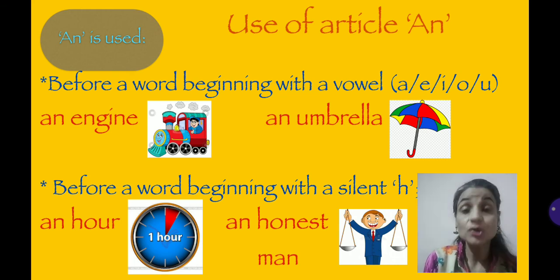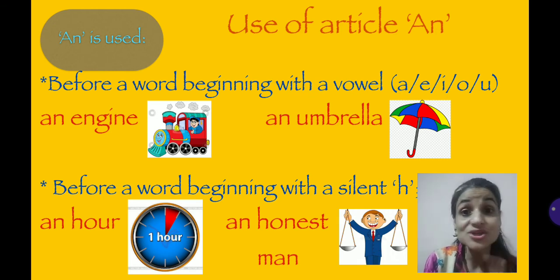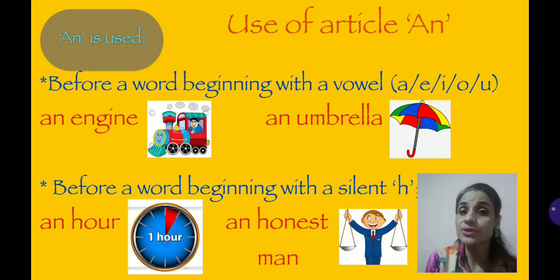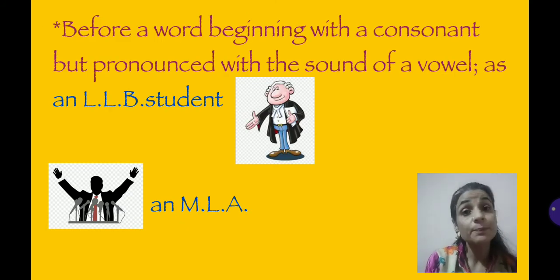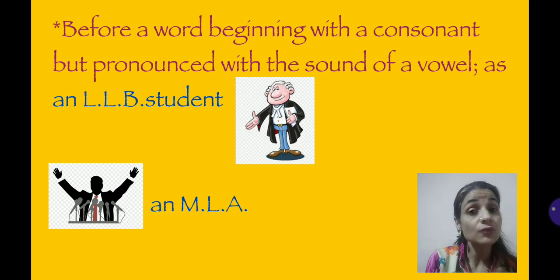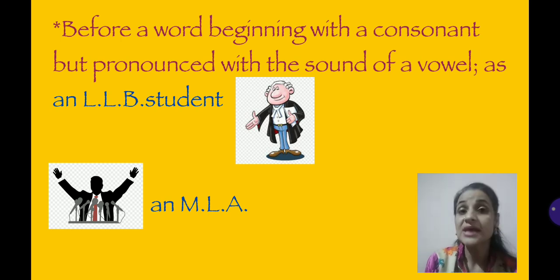The second rule: we use 'an' before a word which has a silent 'h' — where the spelling starts with 'h' but the pronunciation is not 'h', the 'h' is silent. For example, 'an hour' — we don't say 'ha' or 'hur', so 'h' is silent. An hour, an honest man, an honor. These words where 'h' is silent, their pronunciation is a vowel sound, so we use 'an'. Another use of 'an': 'an' is used before a word which starts with a consonant letter, but whose pronunciation is a vowel. For example, an LLB student — 'L' is a consonant letter, but when you pronounce 'L', it sounds like 'el', which is a vowel sound. So we use 'an LLB student', an MLA. Understood?